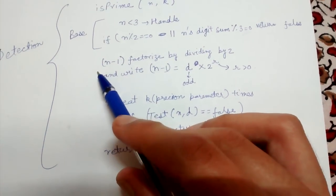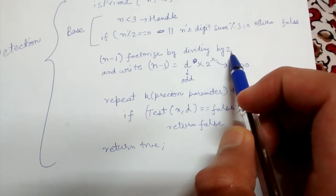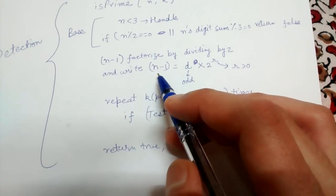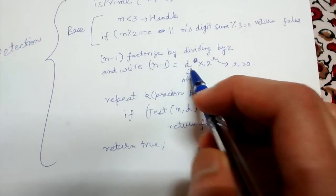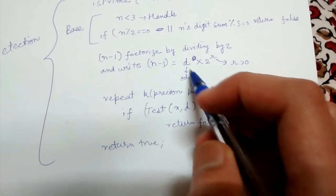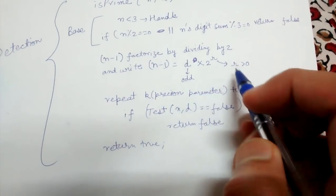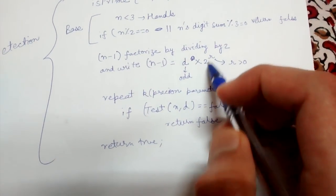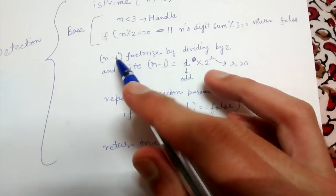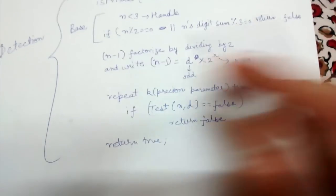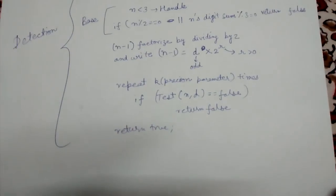Then you take n minus 1 and divide it by 2 repeatedly until you get an odd number d. We write n-1 as d times 2^r, where r is the number of times 2 divides n minus 1.